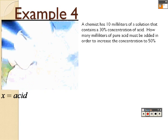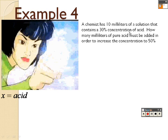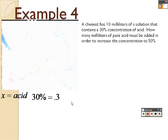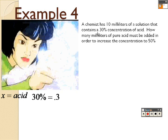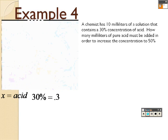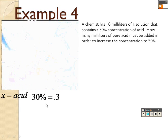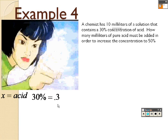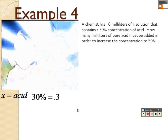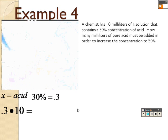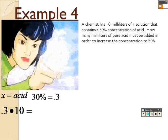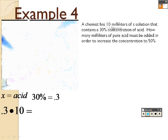We know we're dealing with acid, so I'm going to call that x. And what it's saying is 30% of the concentrate is acid. The chemist says 10 milliliters of solution that contains 30% acid in it. So 30% is 0.3. When we're doing this, 30% times the 10 milliliters.